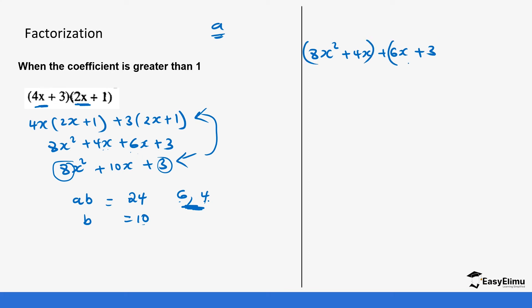Group the first two terms together and the last two together. What is common in the first group? We have an x that is common but also a 4. Note this is a bit different from before — when you look at 8x² and 4x, if you divide both by 4 it works out. So you get 4x outside the bracket, giving 4x(2x + 1), because 4x times 2x gives 8x².